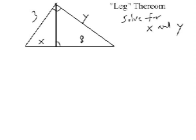In this triangle we're solving for X and Y, and we are going to use the geometric mean theorem that talks about the leg of the right triangle. In this case, the leg of the right triangle is 3 that we're talking about, and we're trying to solve for X and Y. So the leg of the triangle is the geometric mean between the near part of the hypotenuse, which is X, and the entire hypotenuse, which is X plus 8.